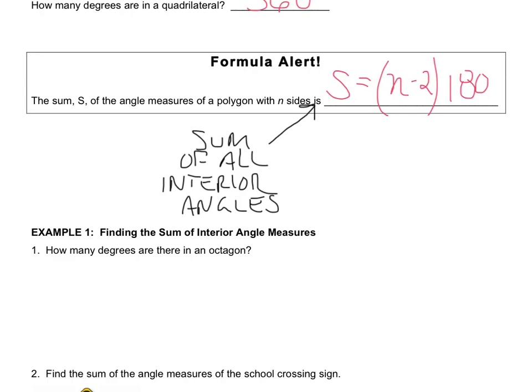The s stands for the sum of all of the interior angles. And the n stands for the number of sides in the polygon. With this information, we can then find out how many angles, degrees are in each of the polygons.